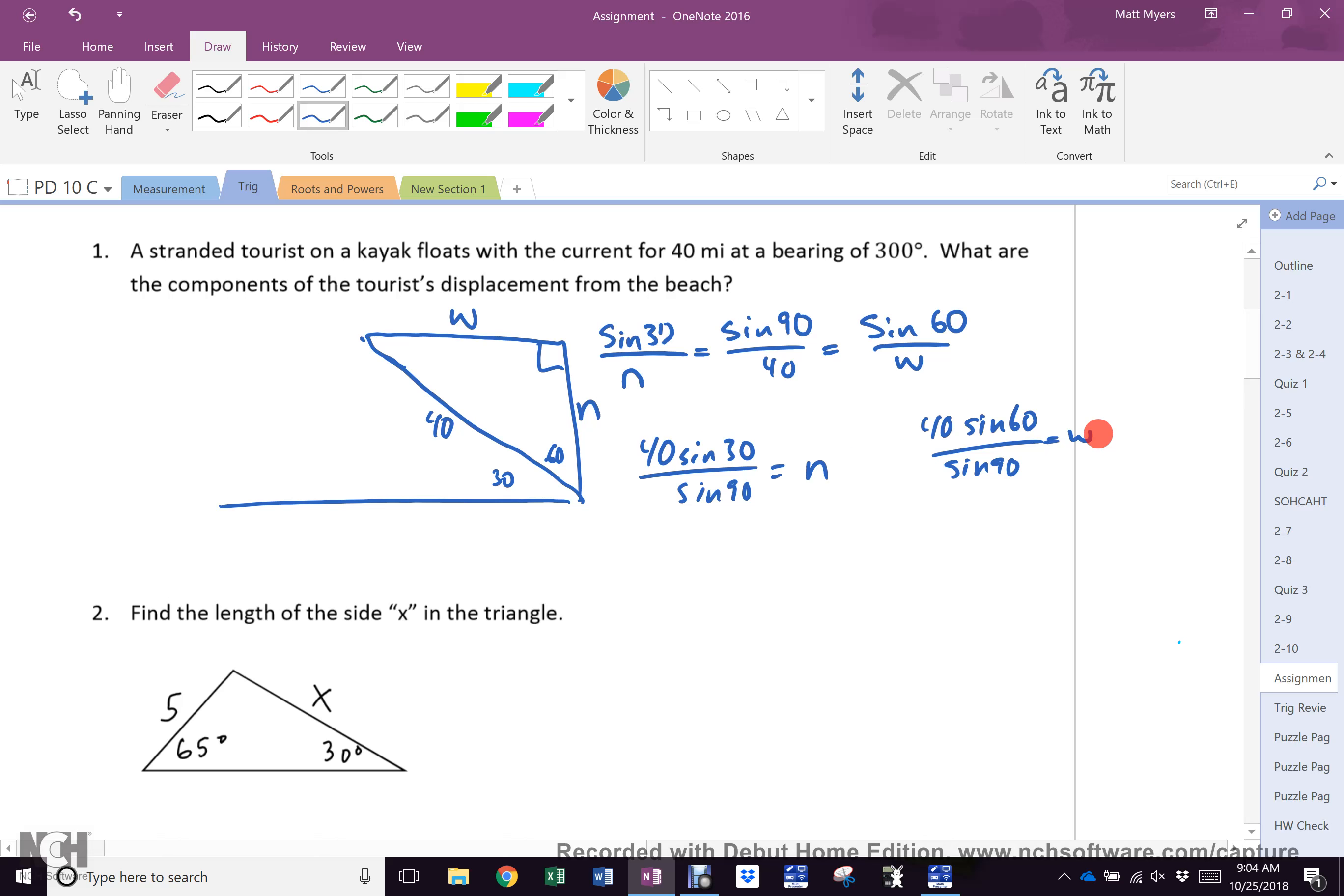And 40 sine of 60 divided by sine of 90 equals west. And the answers, since sine 90 equals 1, is 40 sine 30. North equals 20. And west, 40 sine 60 is 34.64.